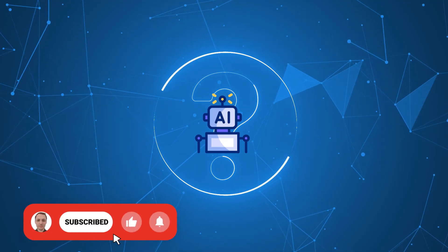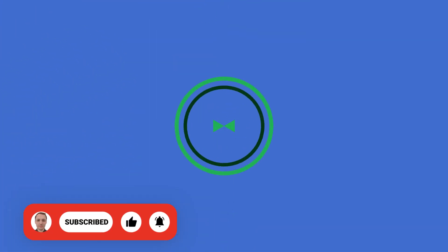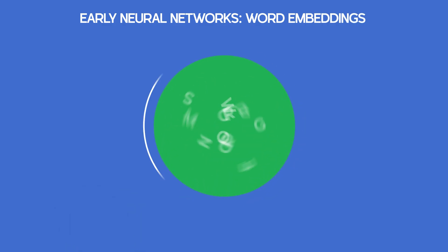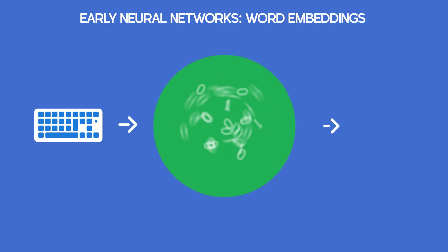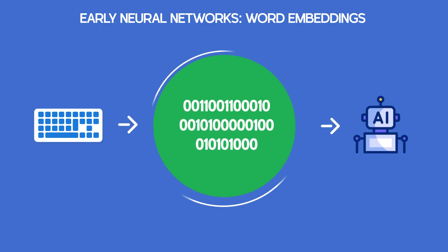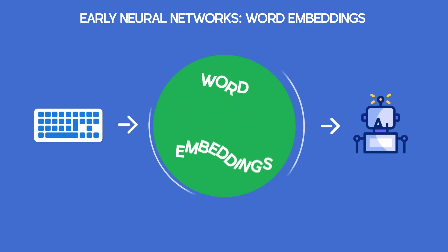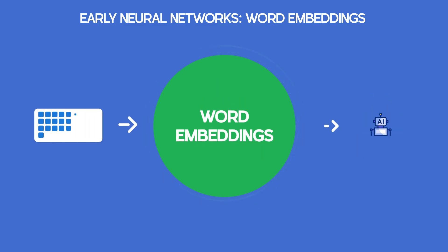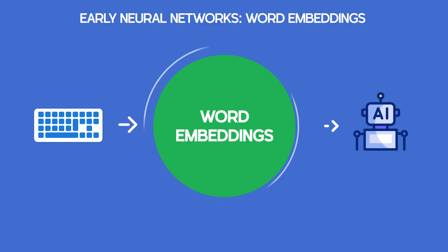How did AI start understanding language? Between 2013 and 2018, word embeddings transformed words into mathematical vectors, mapping meaning through context. Words with similar meanings or contexts were placed close together, enabling AI to grasp relationships, synonyms, and even nuances.